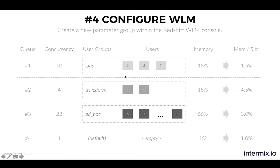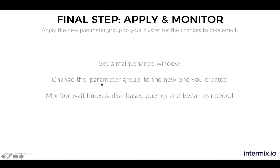This is your new configuration — you've looked at your workloads and know exactly how much concurrency and memory they need. The last step is to apply this new parameter group to your cluster for the changes to take effect. Let your people know, set a maintenance window, change the parameter group to the new one you just created in the console. Then monitor: watch what's happening to your wait times, check whether disk-spill queries are going up or down — hopefully not up — and tweak as needed. And that's pretty much it. Now you're off to the races.